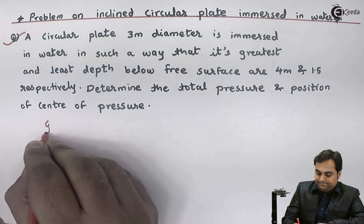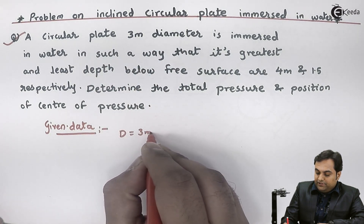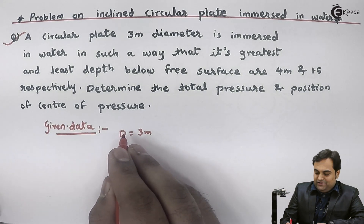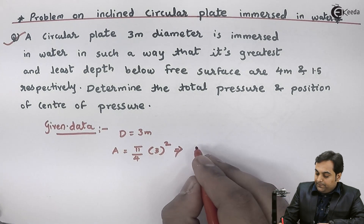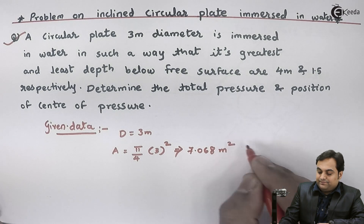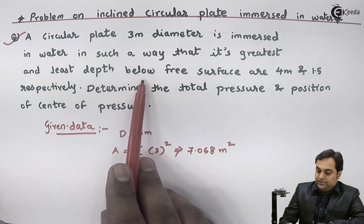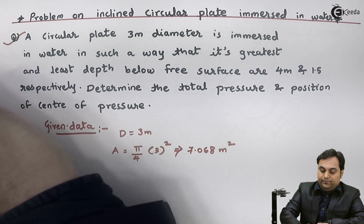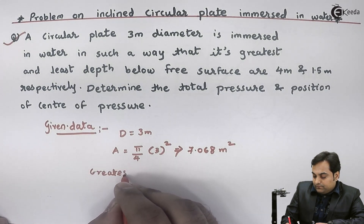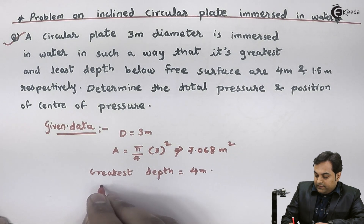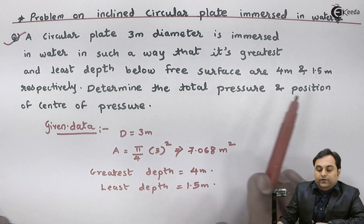From the given data, the diameter D is equal to 3 meter. From the diameter we can get the area: area of the plate = π/4 × D² = π/4 × 3² which comes out to be 7.068 square meter. The greatest depth is equal to 4 meter and least depth is equal to 1.5 meter.